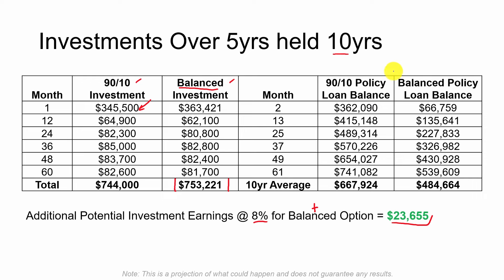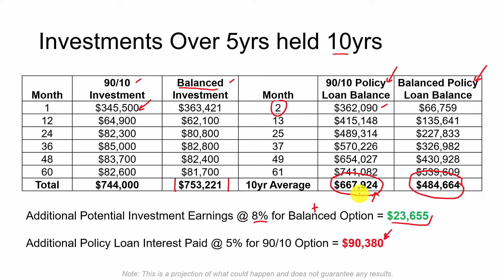Now let's look at the policy loans we're actually taking to make these investments, both for the 90-10 and the balanced policy. The 90-10 is starting out almost $300,000 higher right out the gate in year one. Over the 10 years that we have policy loans outstanding, there's quite a bit more on average outstanding than with the balanced policy. This greater outstanding policy loan represents an additional $90,000 in interest that the 90-10 model has to pay — another positive for the balanced method.